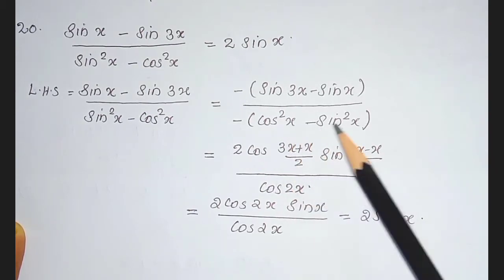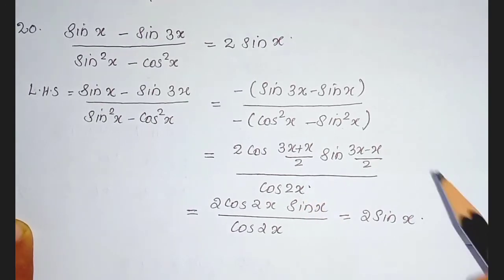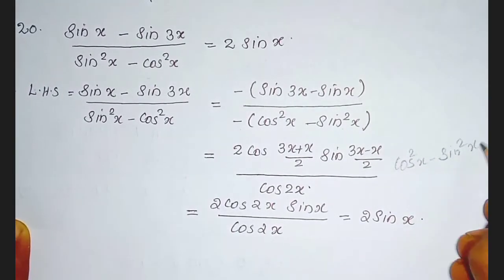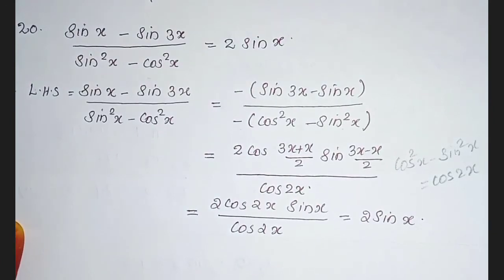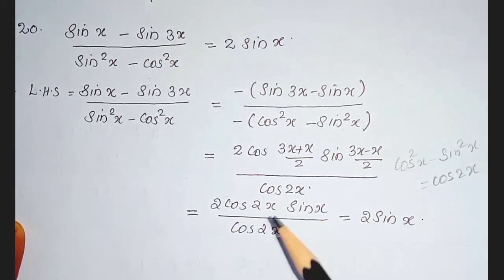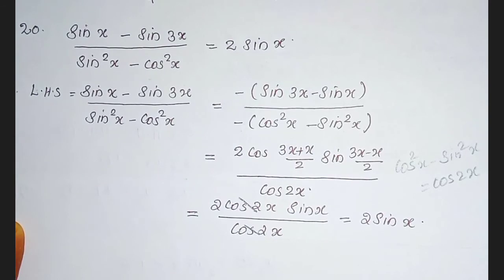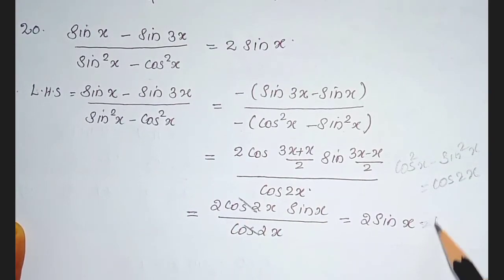Divided by cos squared x minus sin squared x, which is cos 2x. We know that cos squared x minus sin squared x equals cos 2x. So we got 2 cos 2x sin x divided by cos 2x. Here, cos 2x is common in both numerator and denominator. So the balance term is 2 sin x, that is equal to RHS.